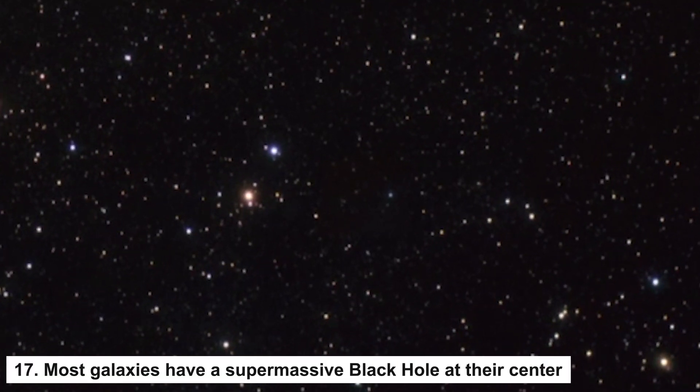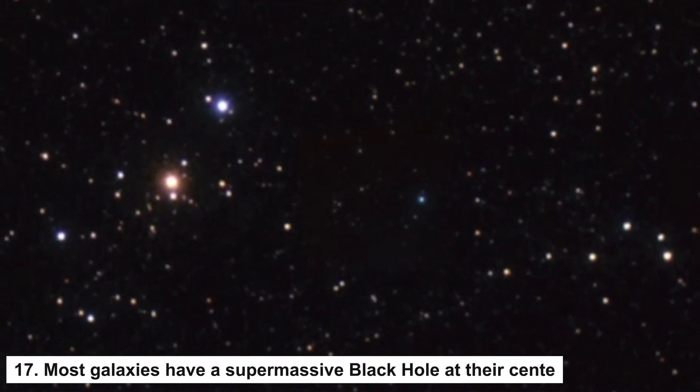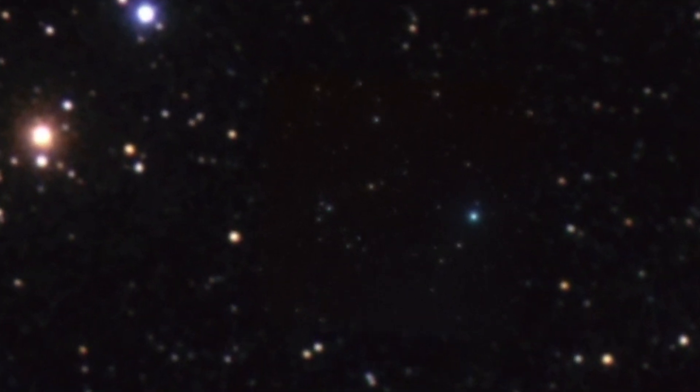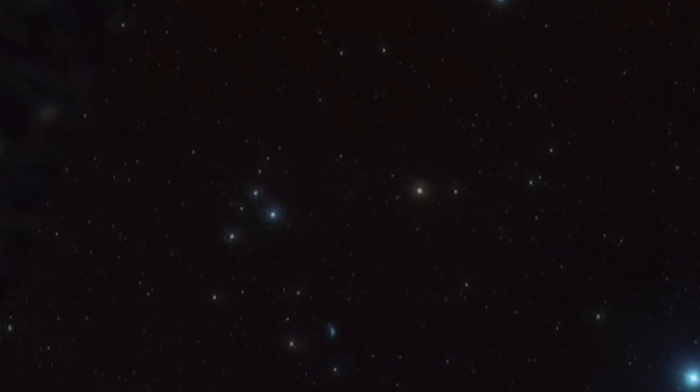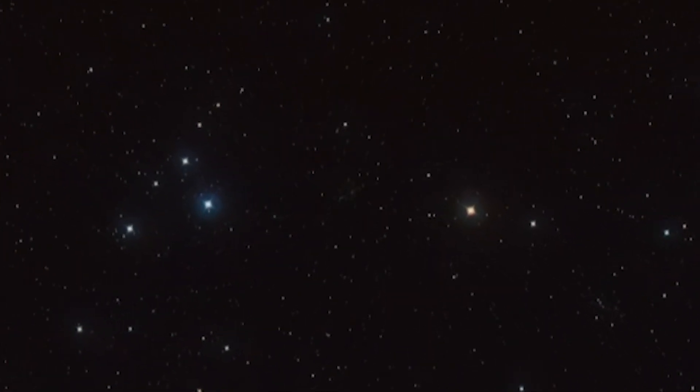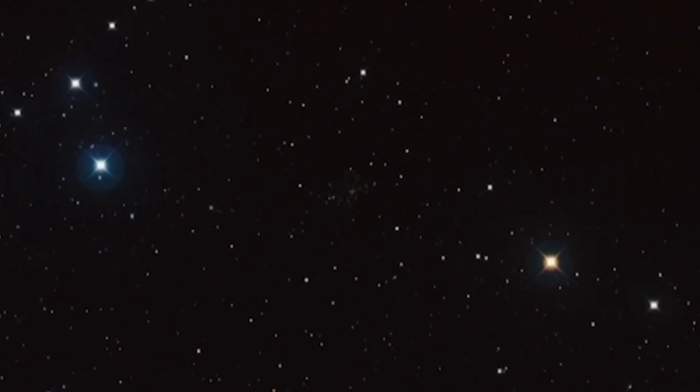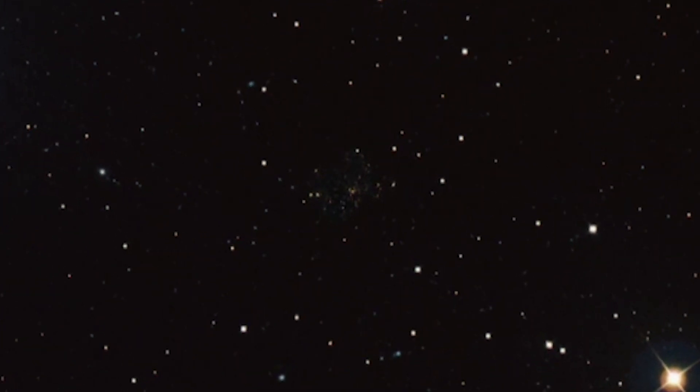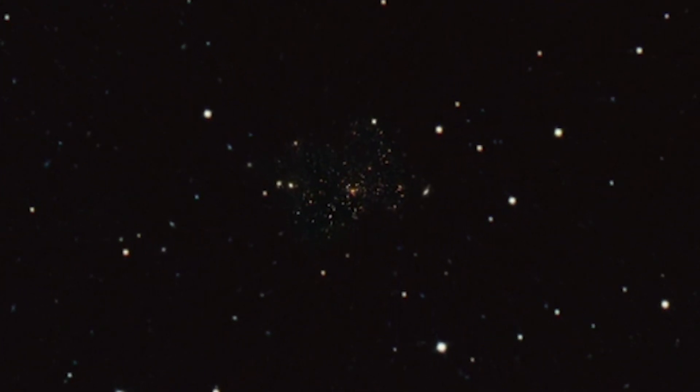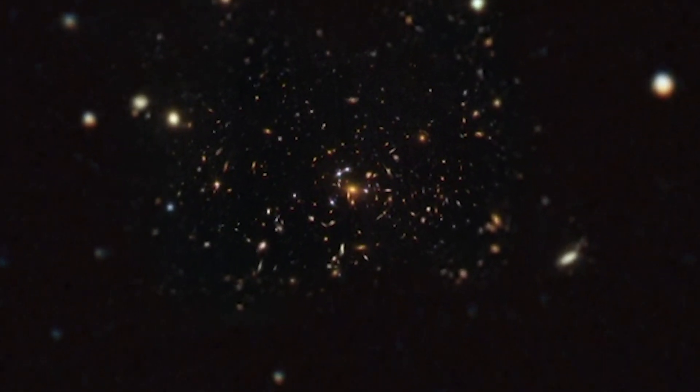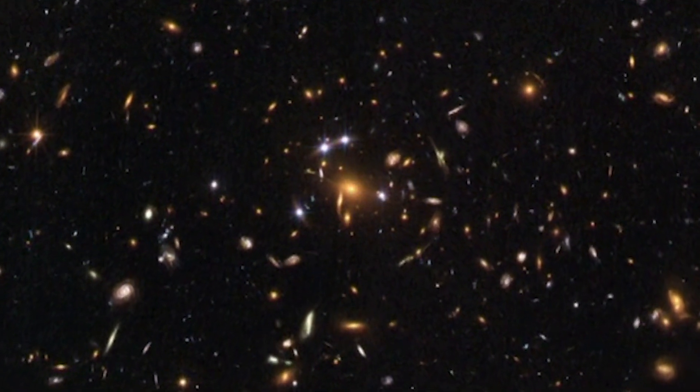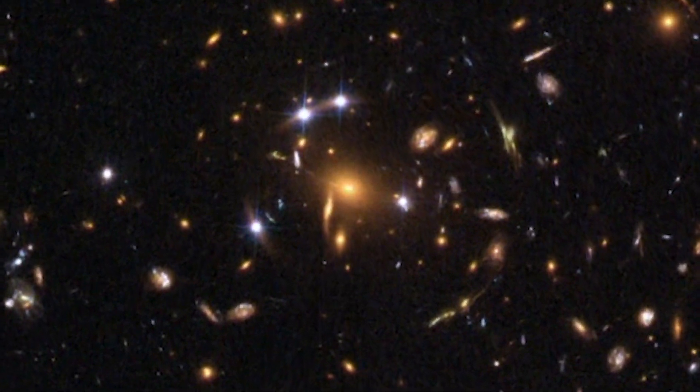Number 17: Most galaxies have a supermassive black hole at their center. At the center of our Milky Way is a supermassive black hole called Sagittarius A, about 5,000 light-years from us. One of the closest galaxies to us is Andromeda, which has a supermassive black hole at its center that is about 100,000 times the mass of our sun. Many other galaxies that scientists analyzed often exhibited the same scenario.